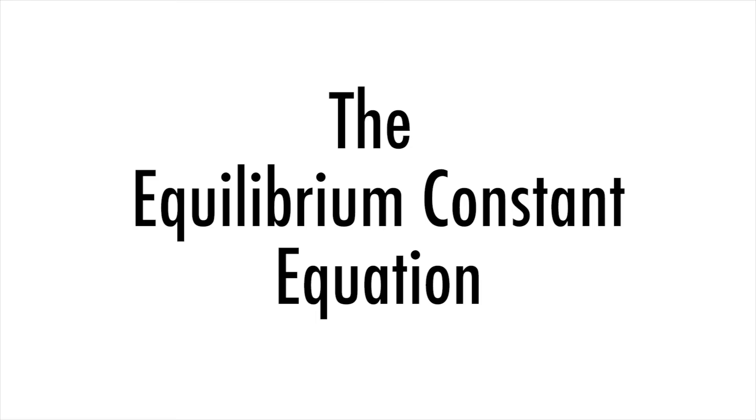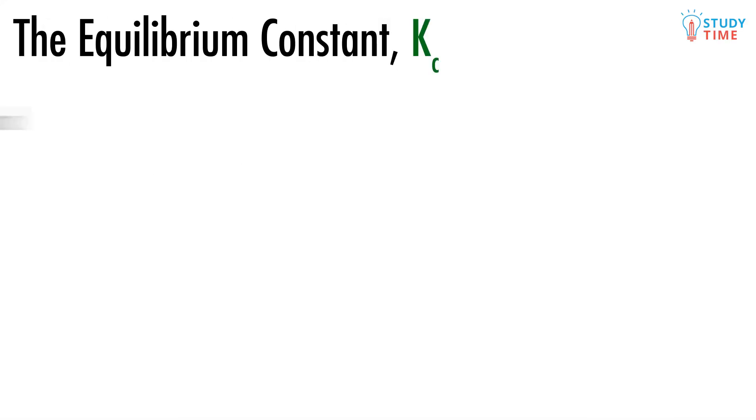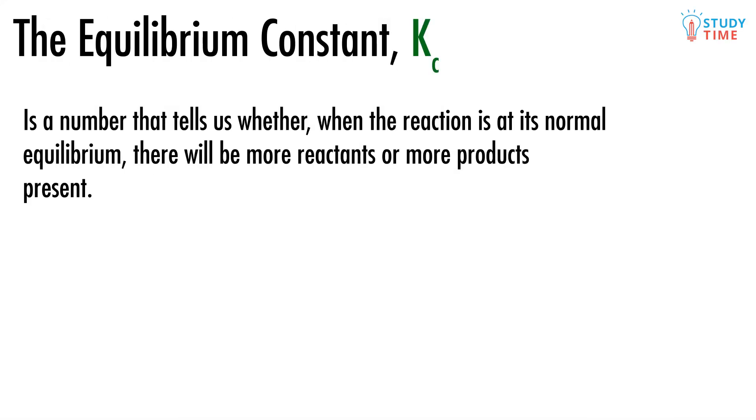So we've talked a little about what it means for a reaction to be at equilibrium. But if we can't see any changes at equilibrium, how do we really know when it's been reached? The equilibrium constant is basically a number that tells us what we should expect to see when the reaction is at its normal equilibrium. This means the ratio of products to reactants when we're at the point that they've stopped changing.